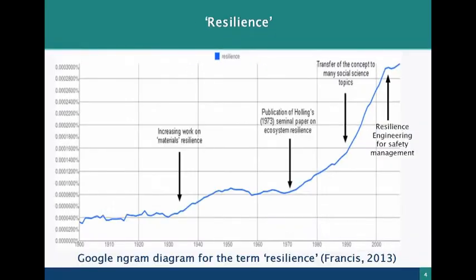The term resilience — here is a Google Ngram diagram for its use — is used quite more frequently now. It used to be a term also for resilience in a mechanical sense. But in the mid-1970s, Hollings wrote a paper introducing resilience for ecosystems. Then it was popularized quite a bit. In the 1990s, there was a transfer to many social science topics and for the ATM domain and safety management. Resilience engineering was introduced at the beginning of this millennium by Hollnagel and others, which is why we are here from a safety perspective looking at resilience.